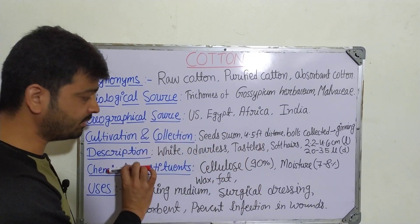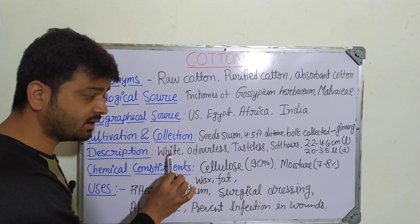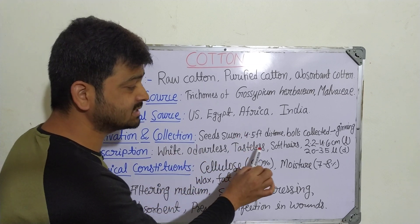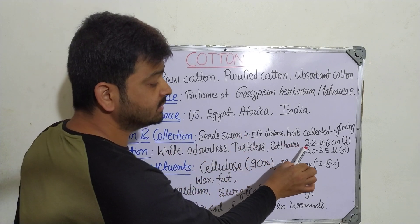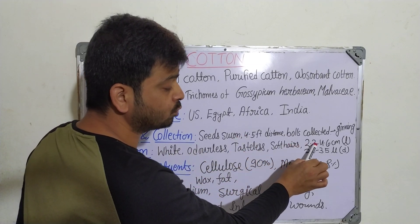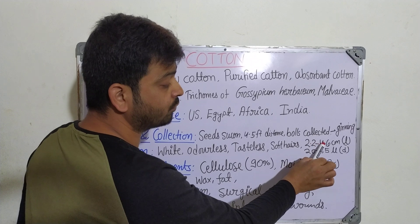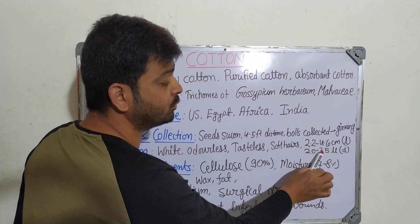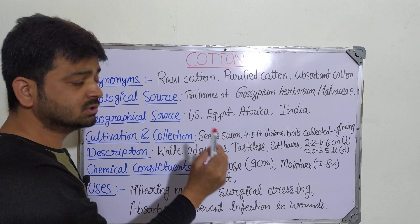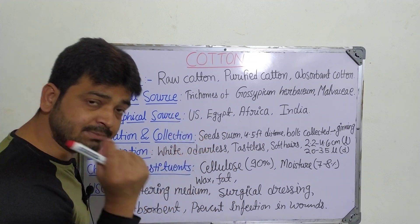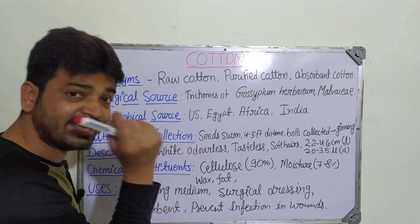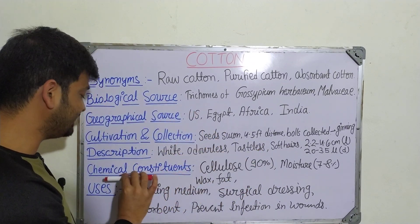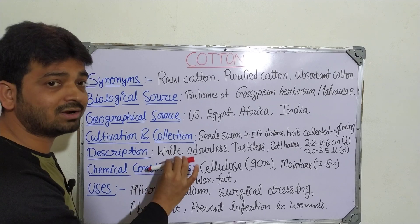Coming to the description: the fiber collected is white in color, odorless, tasteless, and soft. It is 2.2 to 4.6 centimeters in length and 20 to 35 microns in diameter. So it is a very thin, hair-like fiber that we get from cotton.